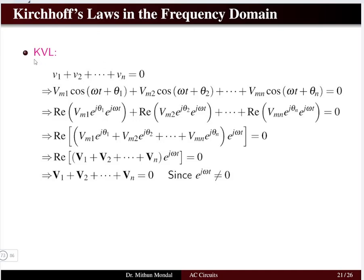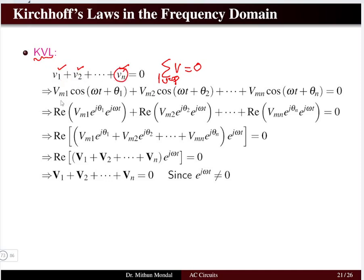First, we will see Kirchhoff's voltage law and then we will go to Kirchhoff's current law. We know that the algebraic sum of the voltage in a closed loop is equal to zero. The potential drop across each particular element present in a circuit, whether it is a source or a load, the sum of all the voltages will be equal to zero. Now, these voltages are basically in the time domain.